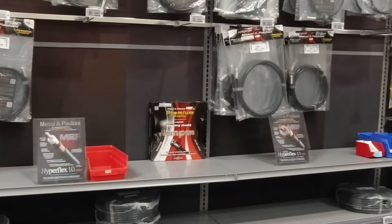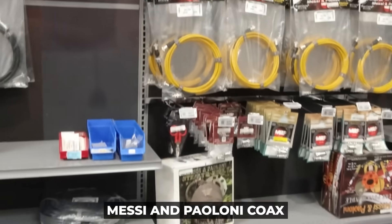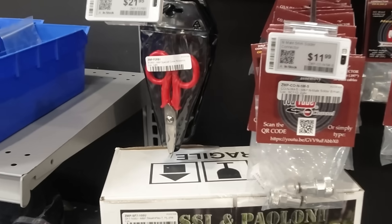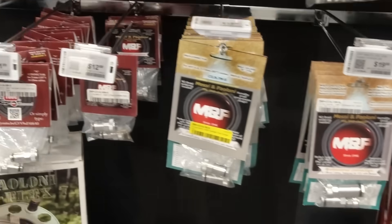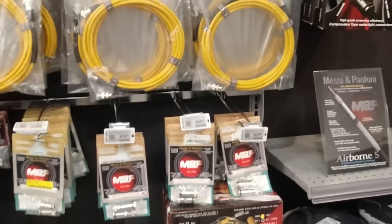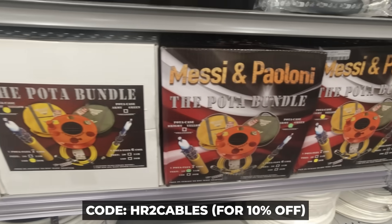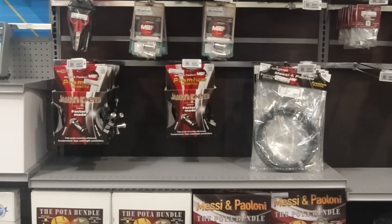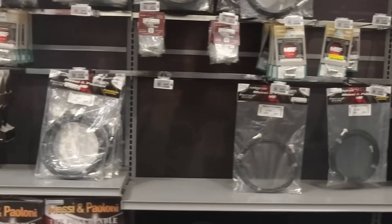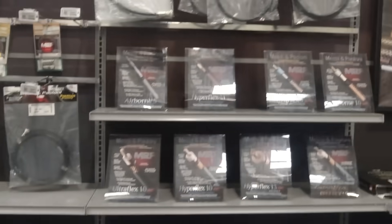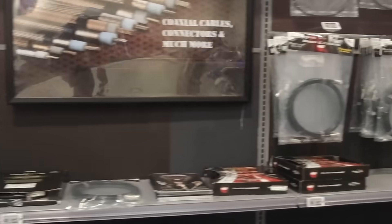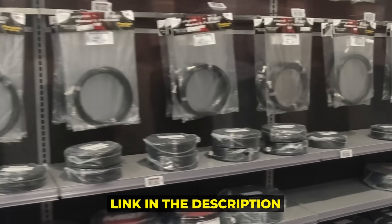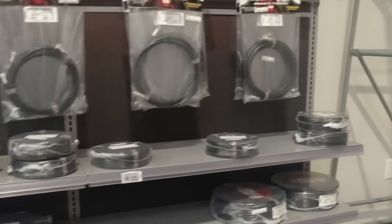Now today's video is sponsored by Messi and Polony Coax out of Italy. You can always save a 10% discount on everything in their store at the link in the description below at the Giga Parts website. Coupon code of HR2 cables will get you 10% off of all Messi and Polony Coax connectors, adapters, tools, items, everything you want for your coax needs inside the shack, inside the truck, and elsewhere.